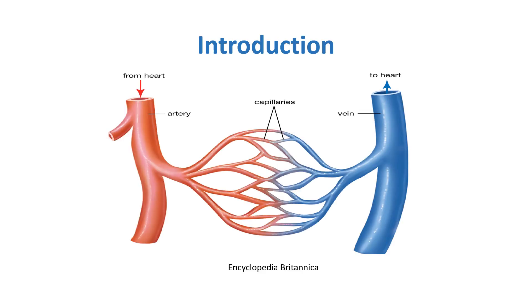To understand arteries, capillaries, and veins, here is a diagram. Arteries carry blood away from the heart. Veins carry blood towards the heart. Since arteries carry blood away from the heart, the blood inside them is oxygenated blood. Whereas veins carry blood towards the heart, so the blood inside them is deoxygenated blood.